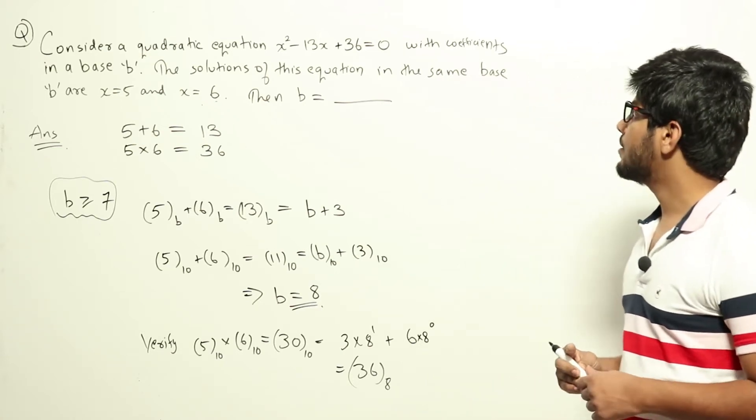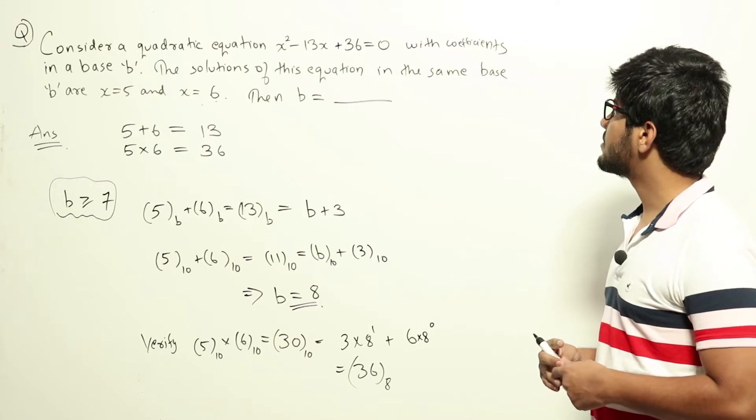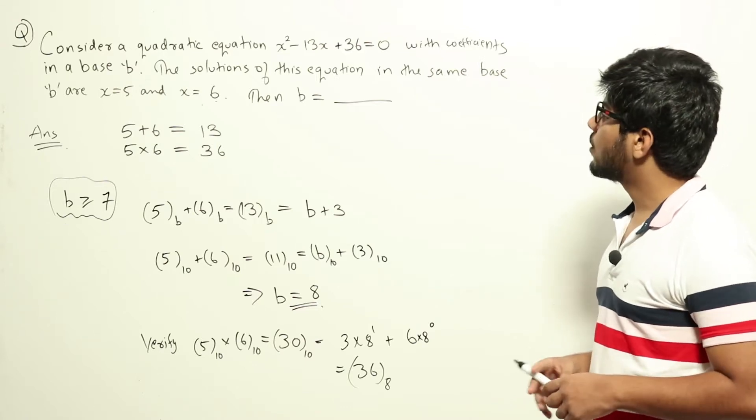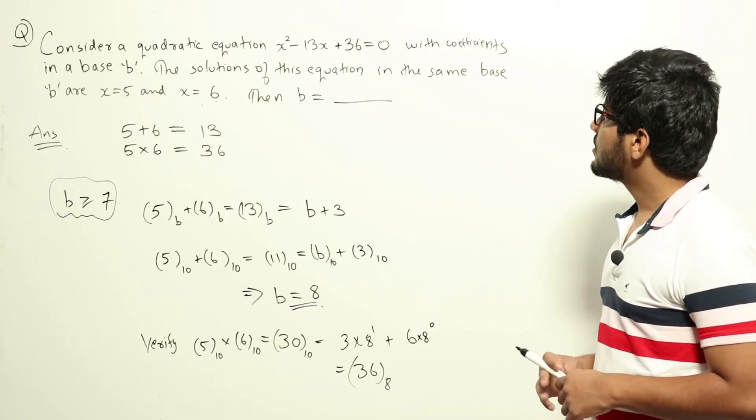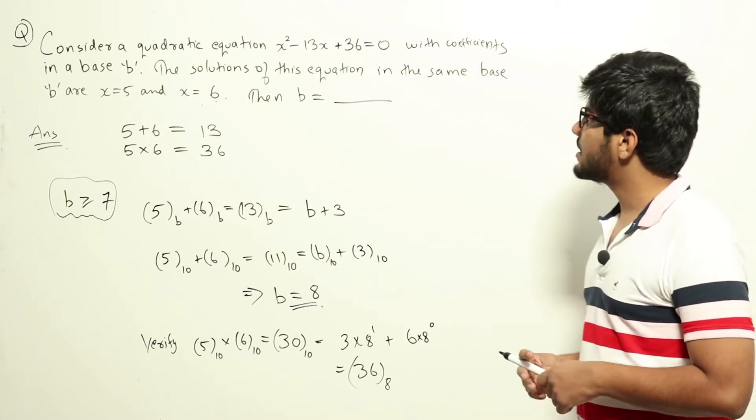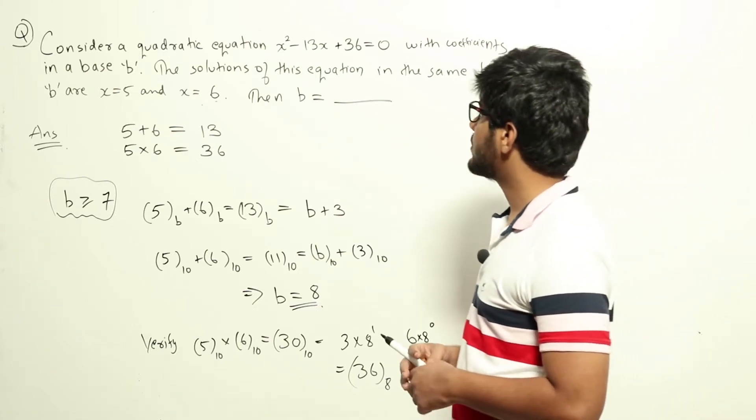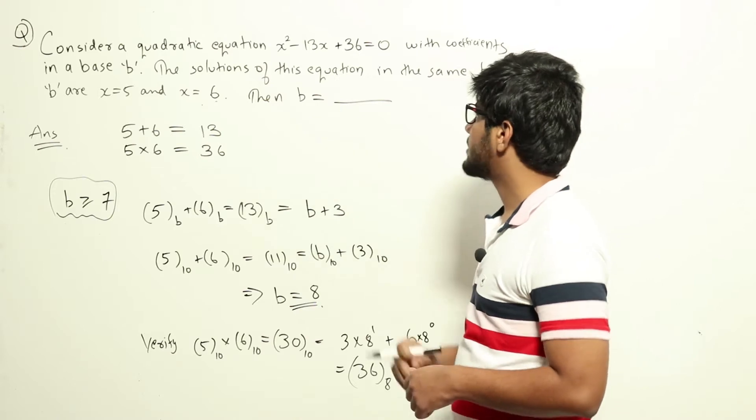Consider a quadratic equation x squared minus 13x plus 36 equals 0 with coefficients in a base B. The solutions of this equation in the same base B are x equals 5 and x equals 6. Then B equals dash.